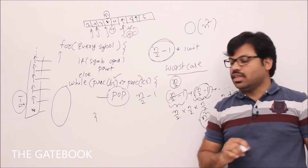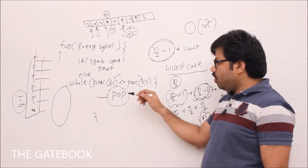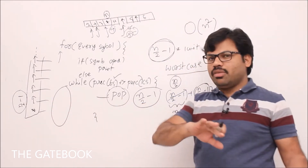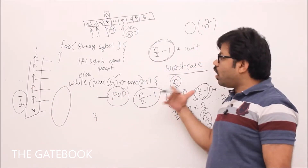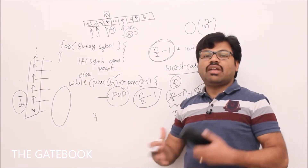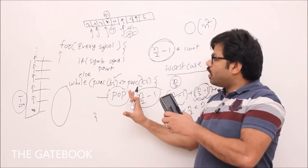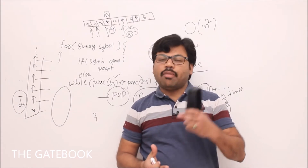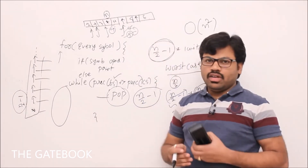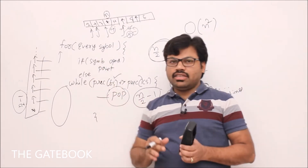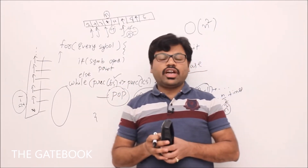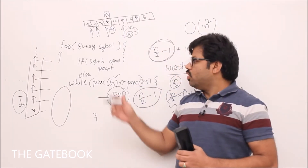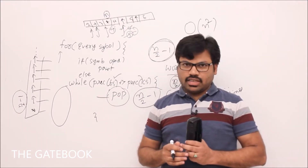The reason is that the while loop is not executed n/2 minus 1 times for every symbol. If you execute it that way one time, all the symbols are popped from the stack — so the second time you can't go into that length again. That's why, rather than calculating with loops like this, we do it a different way called amortized analysis.